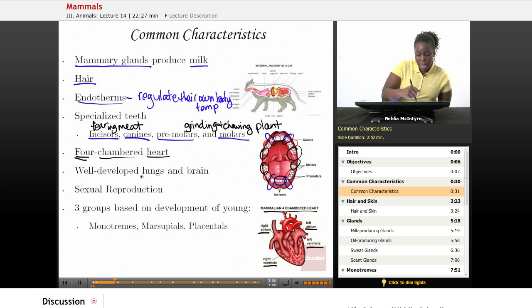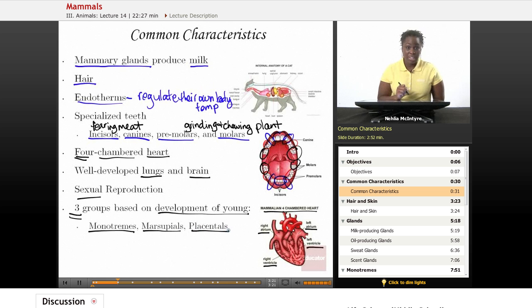All mammals also have well-developed lungs and a well-developed brain. They reproduce sexually, and there's three groups of mammals, and the groups are based upon how the young are developed. The three groups are monotremes, marsupials, and placentals, and we'll talk about each of those.